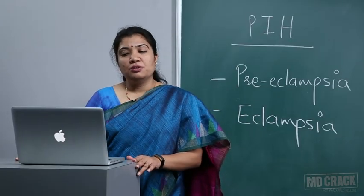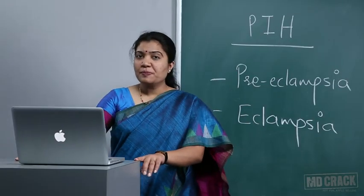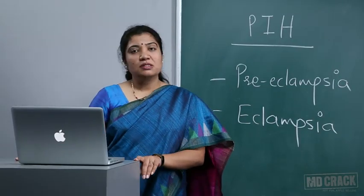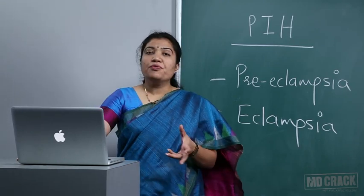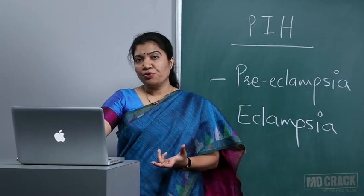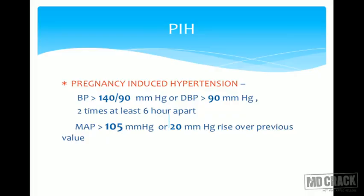Welcome friends. Today's topic is pregnancy induced hypertension. This is a very important topic and we are going to revise it from an MCQ point of view. The definition keeps on changing — criteria are added and deleted. Different books like Datta and Williams say different things, but in general the consensus says that if there is a rise in blood pressure above 140/90 mmHg.